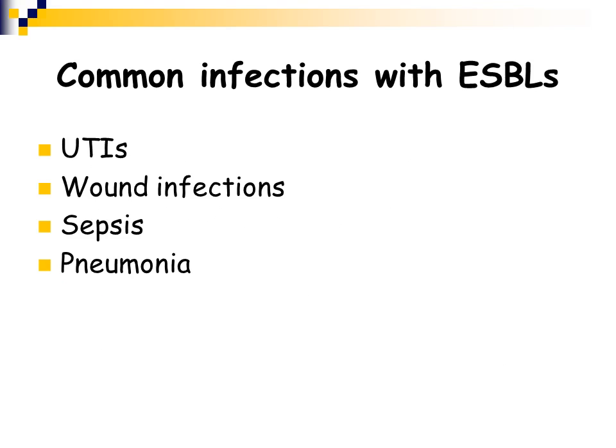Common infections caused by ESBLs are urinary tract infections, which makes complete sense since E. coli is the number one urinary tract infection-causing agent and Klebsiella comes in at a close second or third. Other common infections include wound infections, sepsis, and pneumonia.